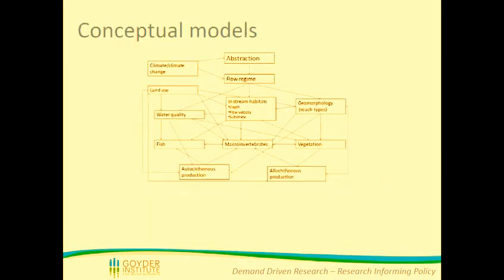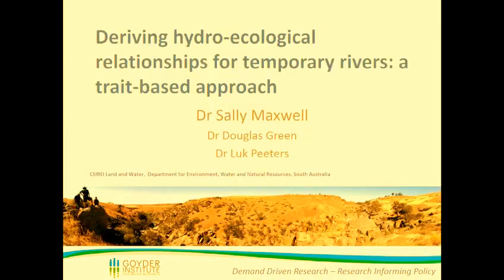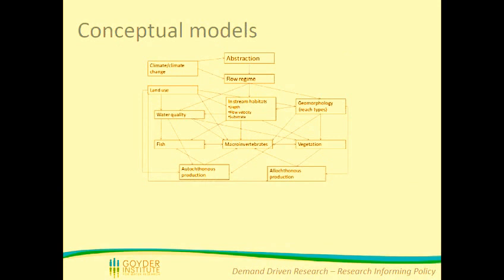To start off with, I think it's always helpful to have a conceptual model. Within the Mount Lofty Ranges, abstraction from farm dams is a critical factor. It's taking flow from rivers that otherwise would receive it and changing the flow regime in a number of ways, including the number of zero flow days or the intermittency within those rivers.